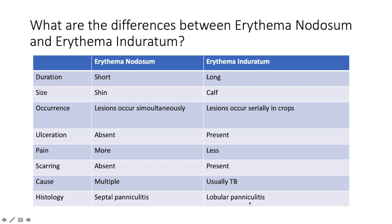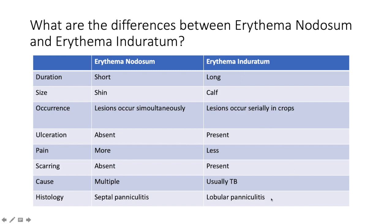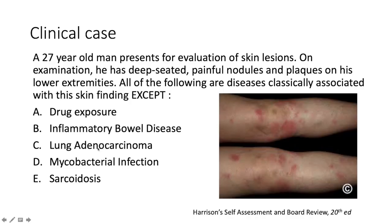Both erythema nodosum and induratum cause panniculitis histologically, but nodosum causes septal panniculitis whereas induratum causes lobular panniculitis. Also shown here is erythema ab igne — which may resemble livedo reticularis with a mesh-like reticulum framework — and commonly occurs in people who sit in front of fires or heaters to keep warm in the cold.